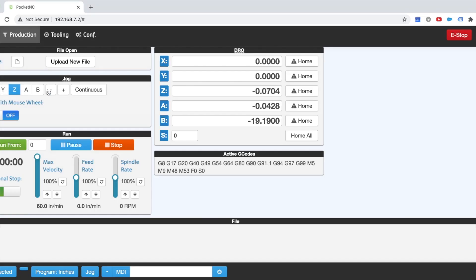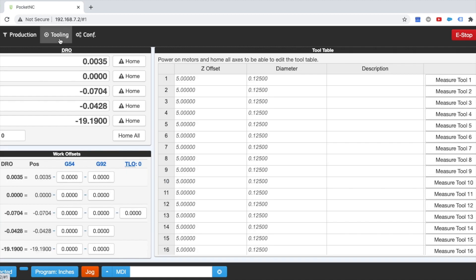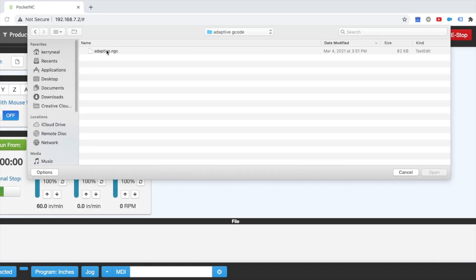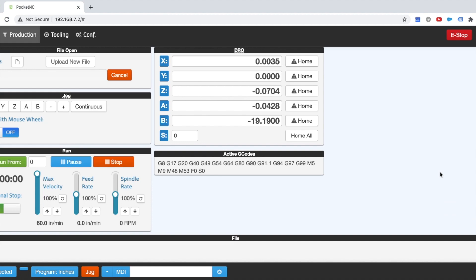The Pocket NC includes a user interface controller for basic functionality. You will need to provide a CAD CAM software to generate tool paths. The Pocket NC runs off of .ngc files only.